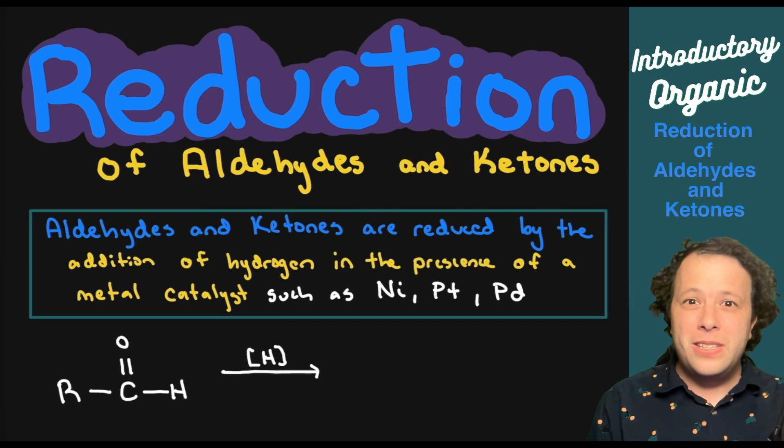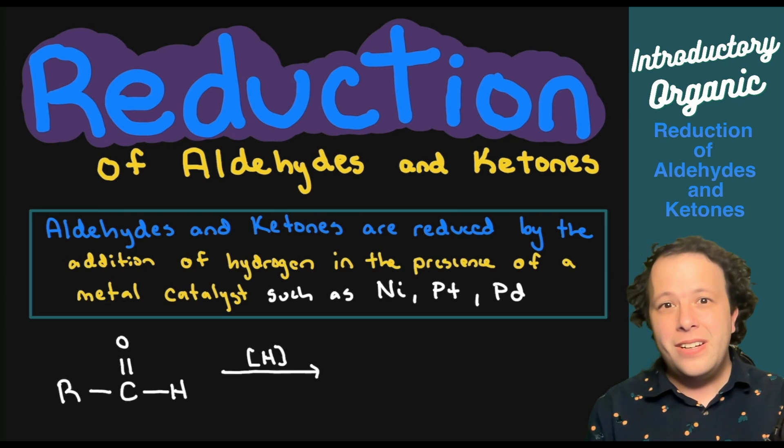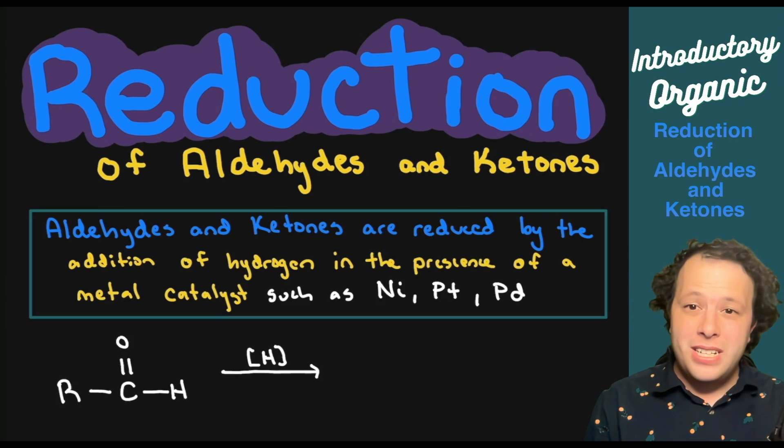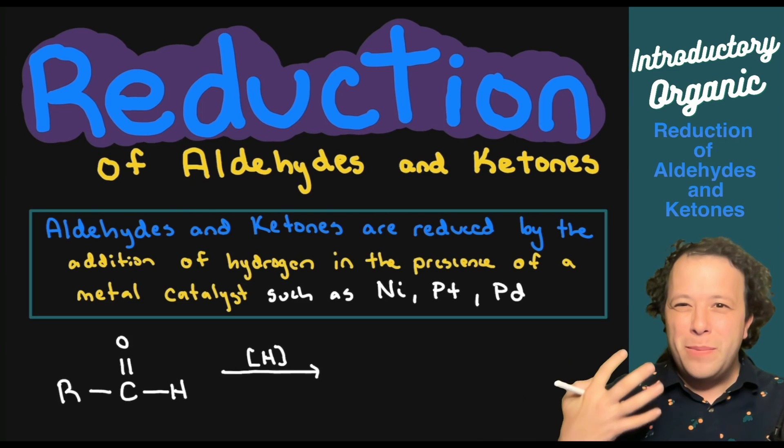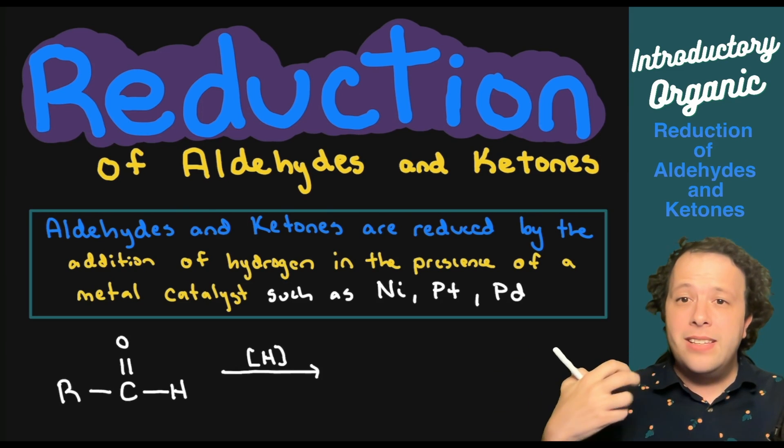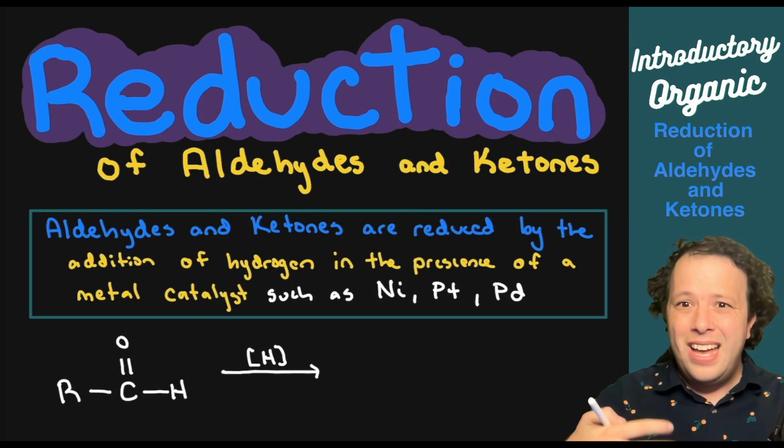We're going to specifically look at how aldehydes and ketones are reduced by the addition of hydrogen in the presence of a metal catalyst. When we say reduced, we mean reducing the number of oxygens and adding hydrogens.